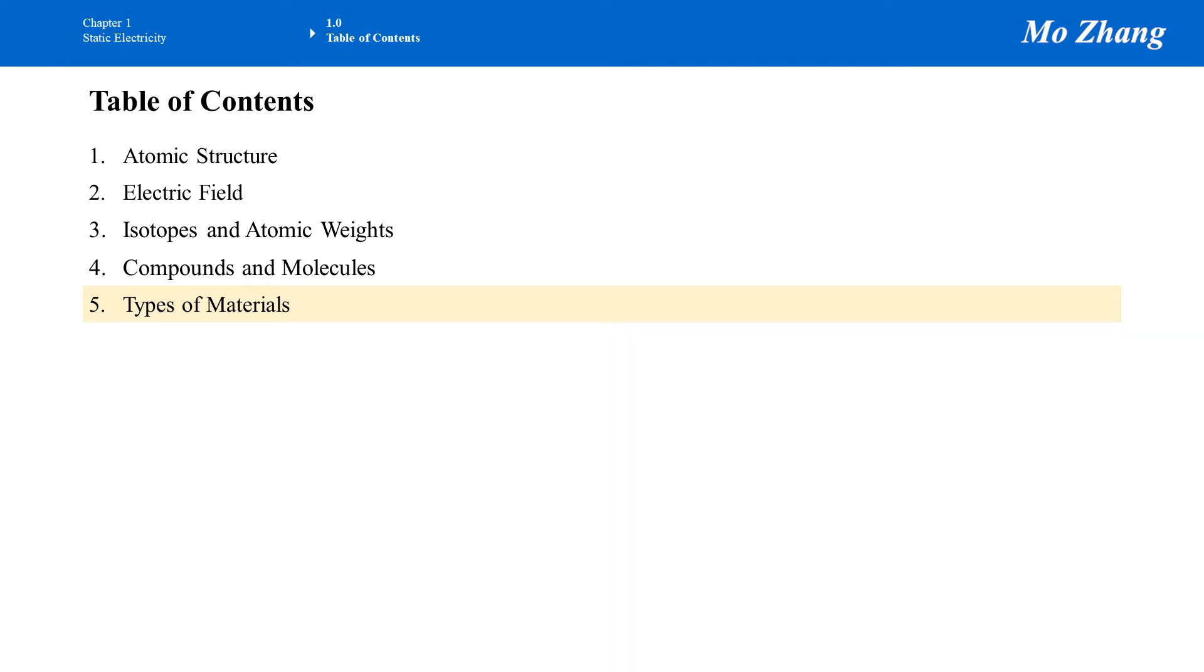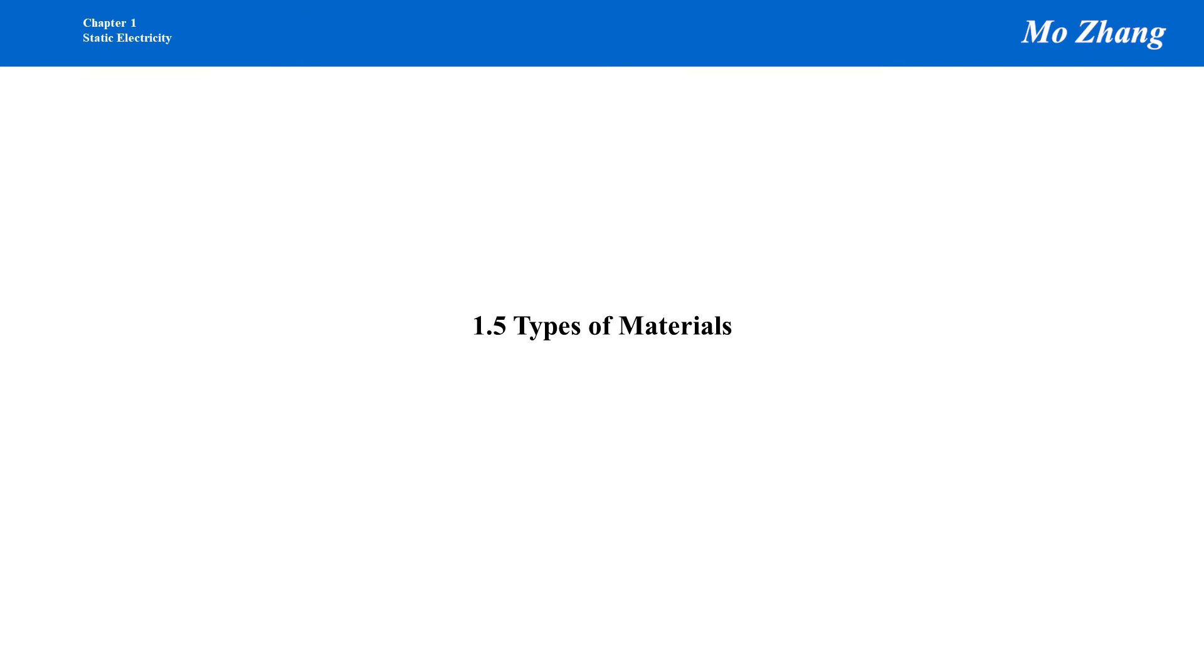This is session 1.5. It's about the types of materials. There are mainly three different types of materials. We categorize the materials into three different types.